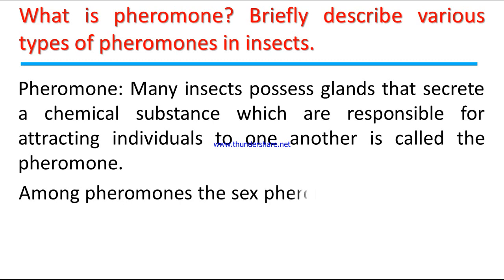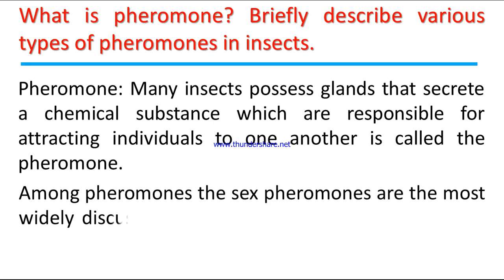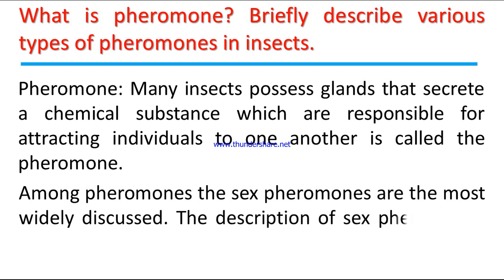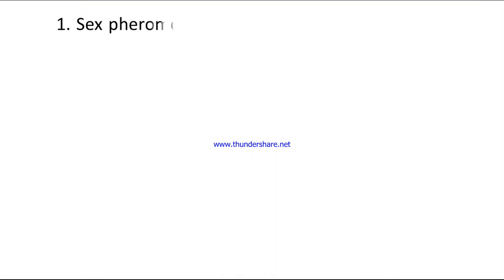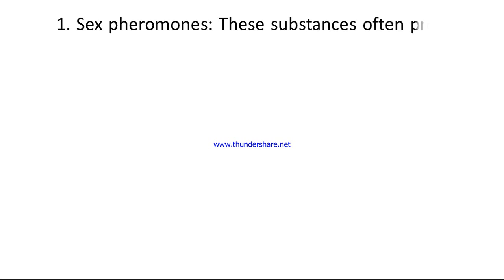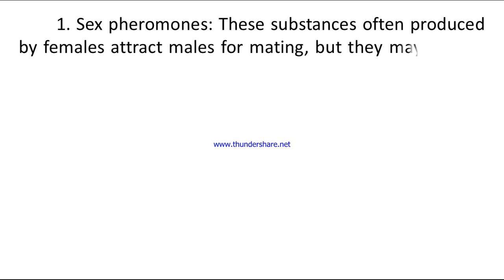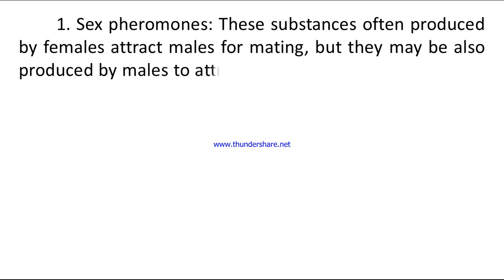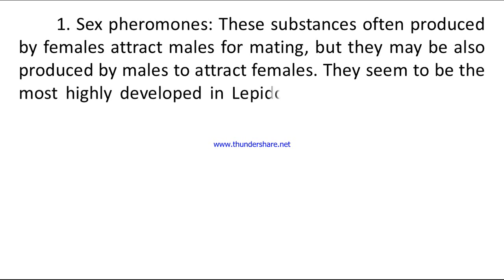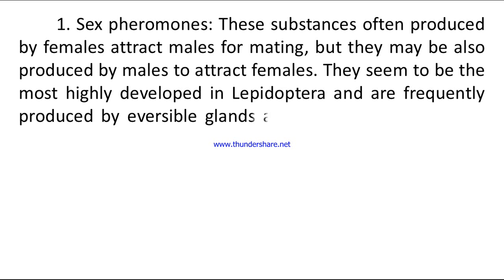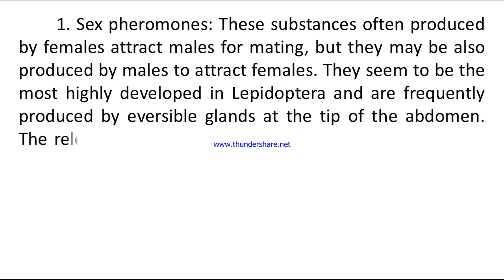Among pheromones, the sex pheromones are the most widely discussed. Number one: sex pheromones. These substances, often produced by females, attract males for mating, but they may also be produced by males to attract females. They seem to be most highly developed in Lepidoptera and are frequently produced by reversible glands at the tip of the abdomen.